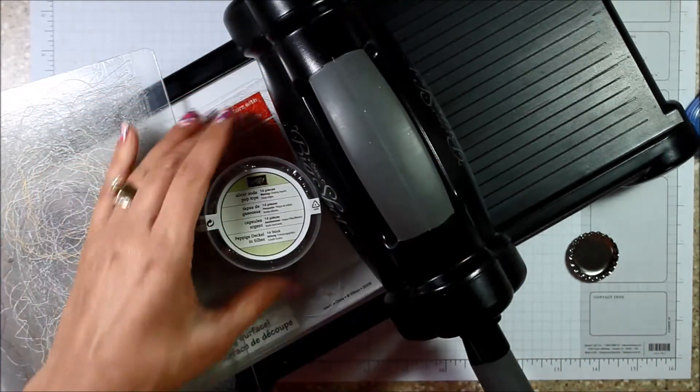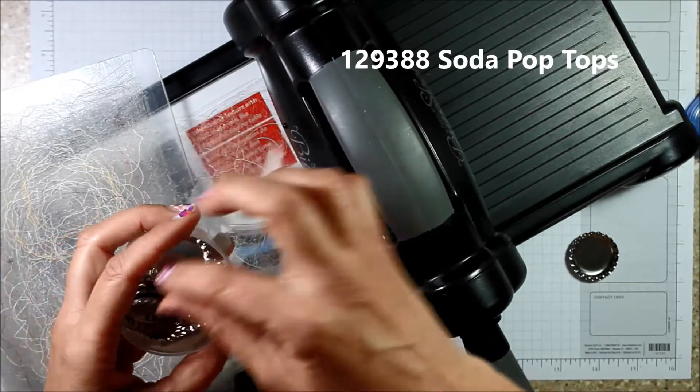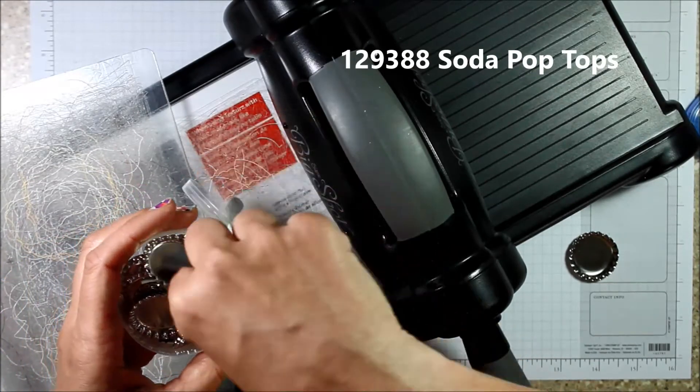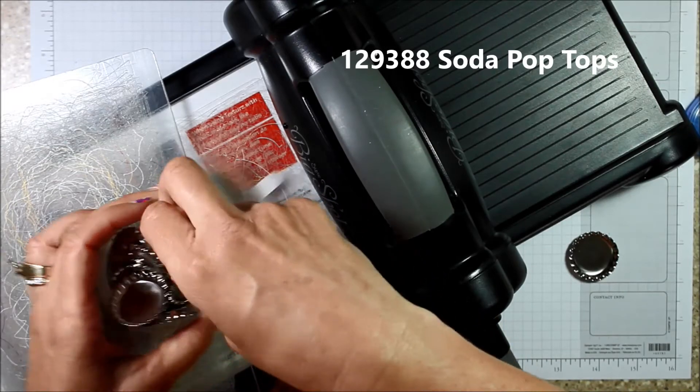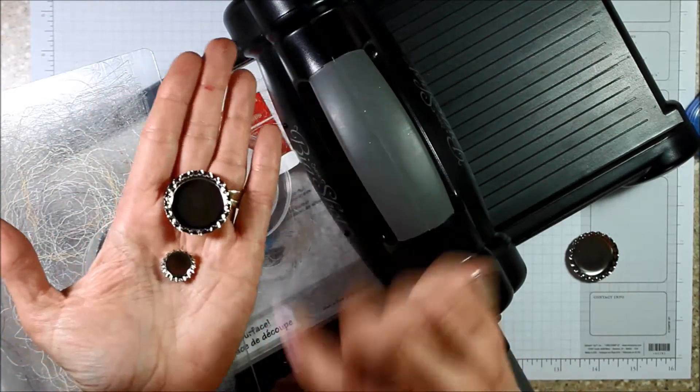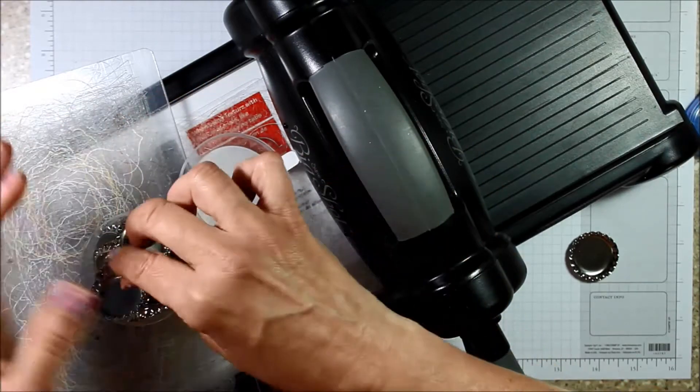When you get the silver soda pop tops, you get 16 pieces. Eight of them are the bigger soda pop tops and then you get eight that are the little baby ones. Let me show you those. So that's what you get. And I'm going to show you how to play with this big one right now.